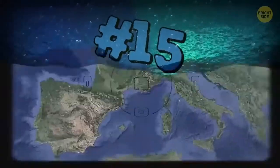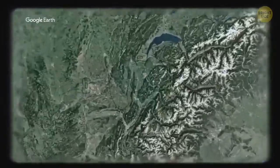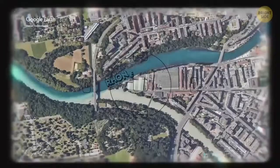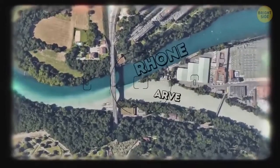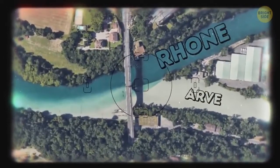The Rhône and Arve rivers. They flow into each other in Geneva, Switzerland. The Rhône is a pure river that flows out of the Lake of Geneva. The Arve is cloudy as it gets its water from the glaciers of the Chamonix Valley.